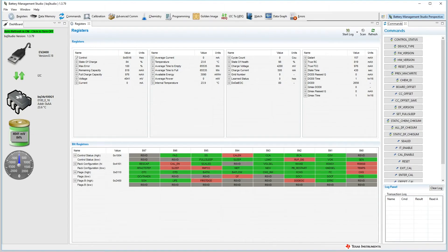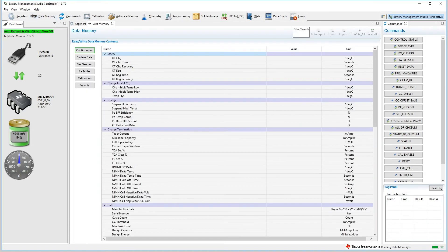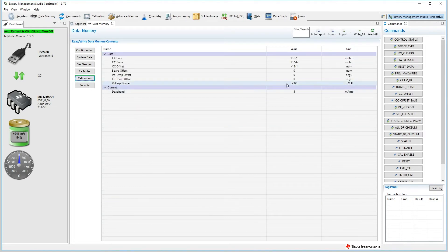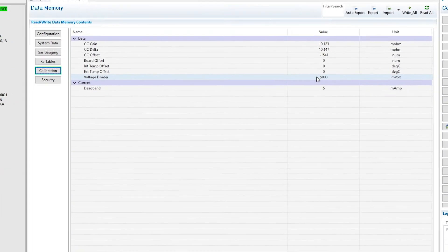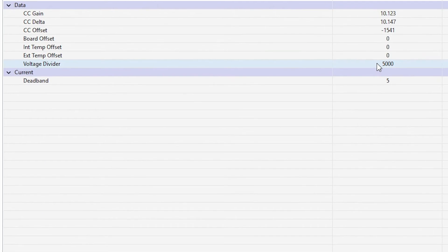With the BQ34Z100G1 dashboard loaded, move your cursor to the ribbon and select data memory to open the data memory window. In the data memory window, select calibration to view calibration parameters. Our parameter of interest is voltage divider, which is set at 5000mV.